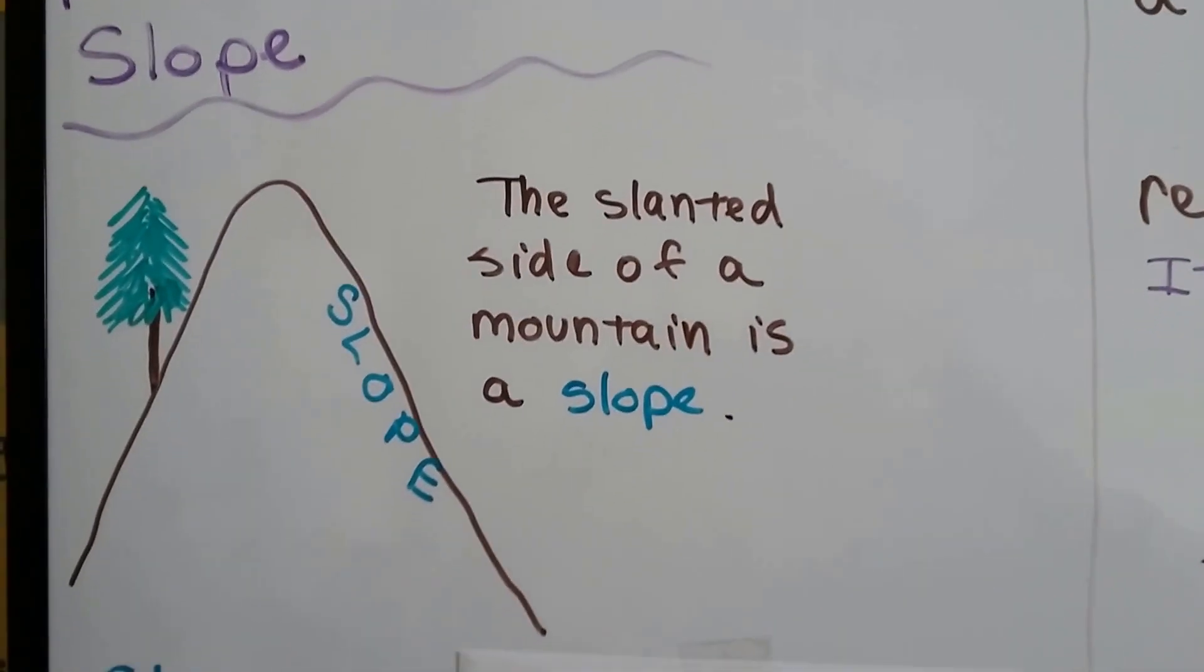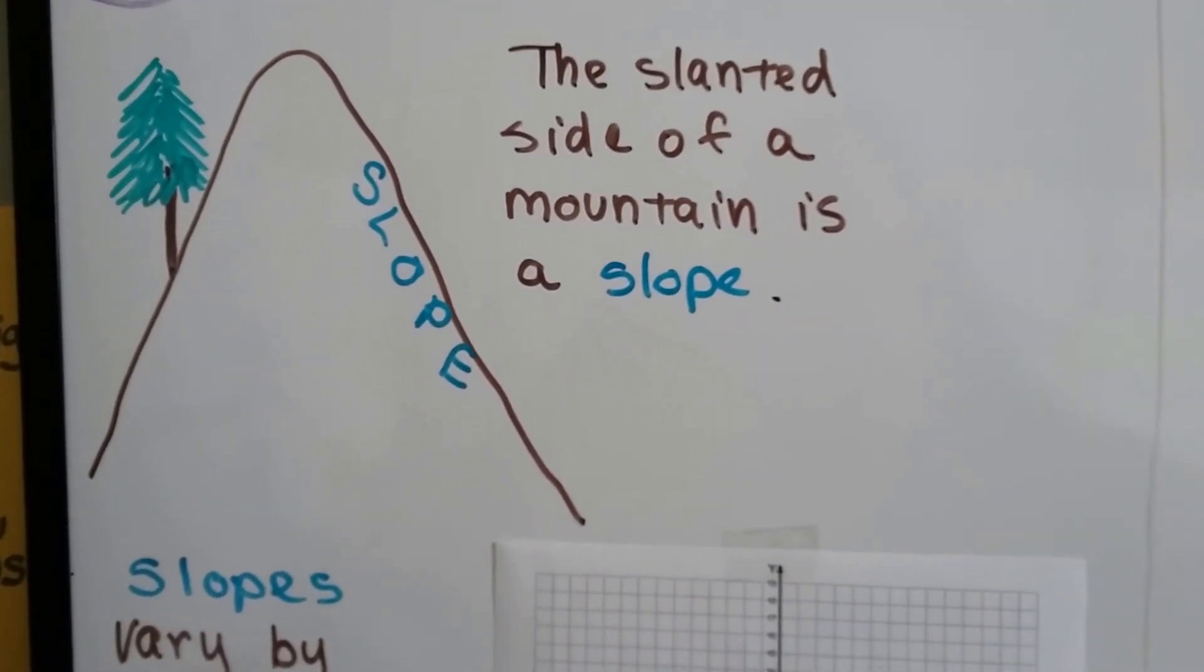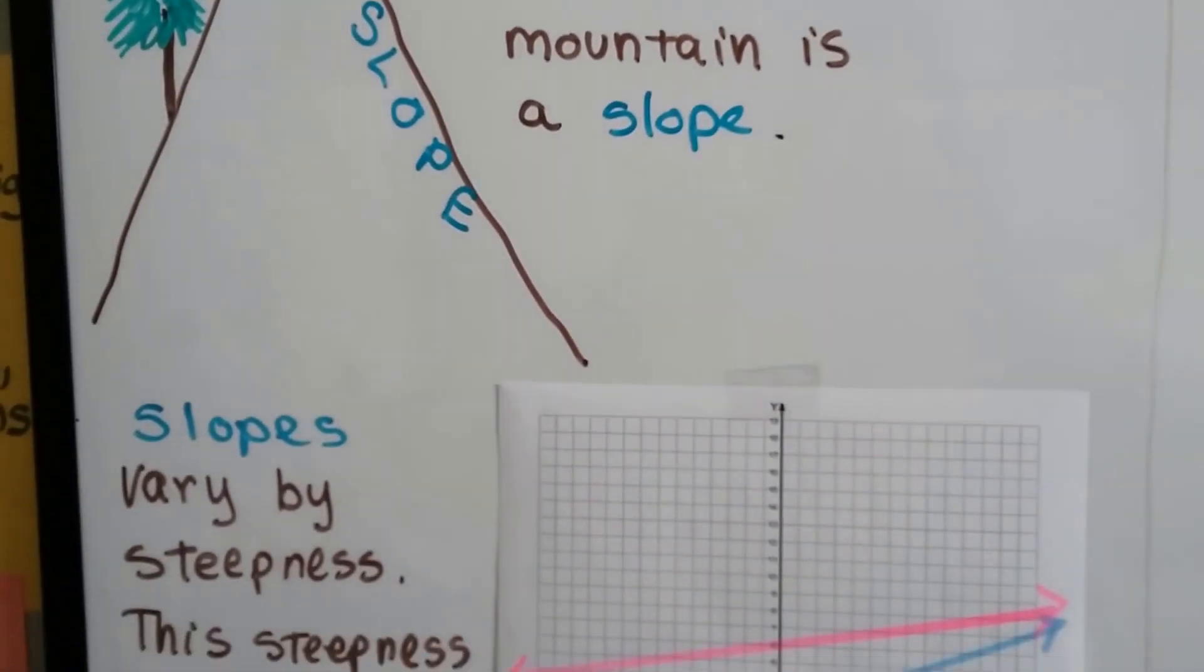And the slanted side of a mountain is a slope, like skiers go skiing on the slope of a mountain, right? It's a line that's on an angle.